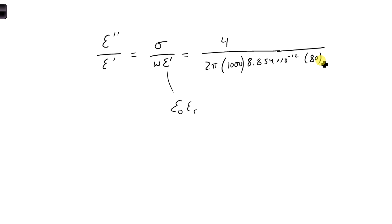If we evaluate this, we will find that our threshold is epsilon double prime over epsilon prime. If it's greater than 100, then we know that the material is a good conductor.